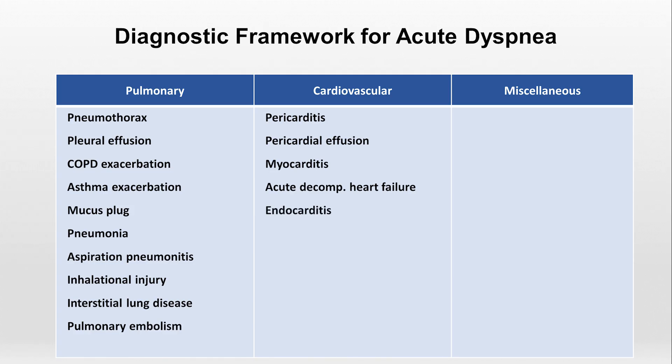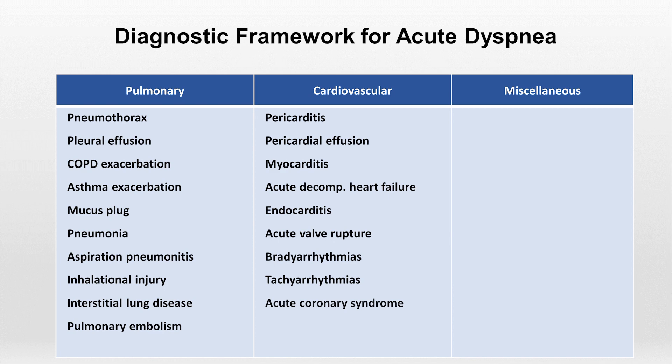Continuing with cardiovascular causes, we have endocarditis, which is an infection of a heart valve, acute valve rupture, bradyarrhythmias and tachyarrhythmias — which are unusually slow and fast heart rhythms respectively — acute coronary syndrome, which is an umbrella term that most notably includes heart attacks, and hypertensive emergency.